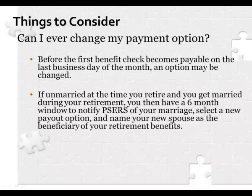Once you complete your retirement application, you have some wiggle room to make last-minute adjustments to your payout selection. A last-minute change must be received in writing before your first retirement check is paid. If you are unmarried at retirement and select the maximum payment option, and then get married during retirement, you have a six-month window to notify PSERS, select a new payout option, and name your new spouse as beneficiary.